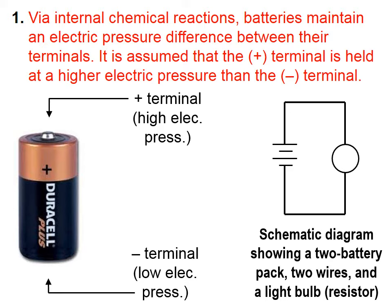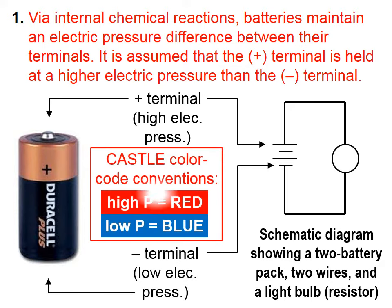On the right, we have a schematic diagram that shows a two-battery pack, two wires, and a light bulb. One battery is symbolized by a long line and a short line, so here we have two batteries in series. On the right, we have our resistor, and of course we have the wire at the top and the wire at the bottom. The positive terminal is assumed to have a high electric pressure, and the negative terminal of the other battery is assumed to have a low electric pressure.